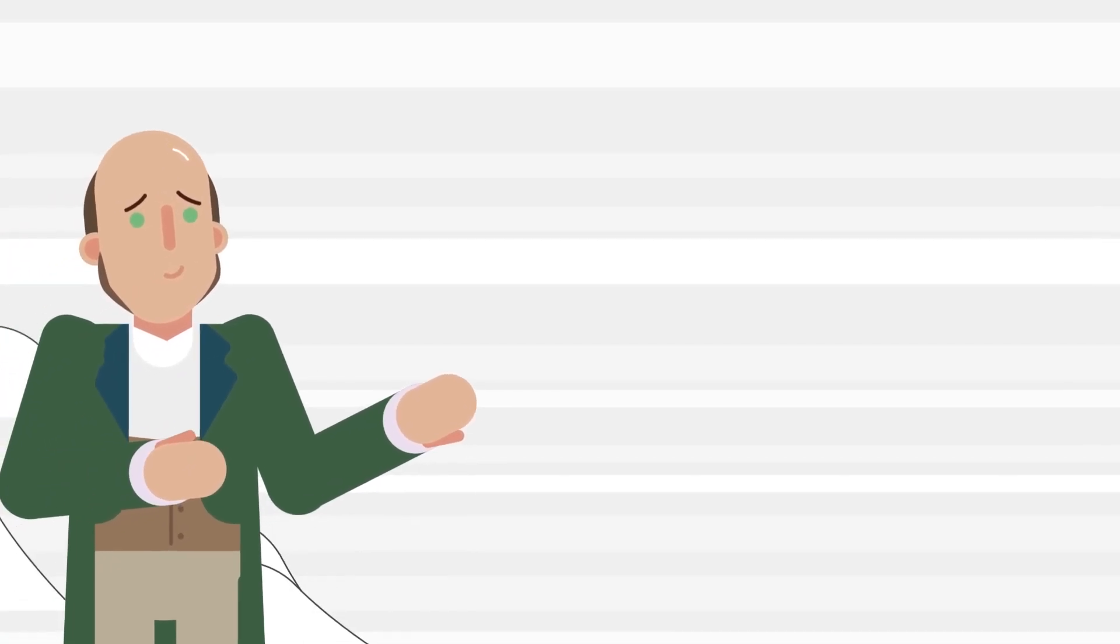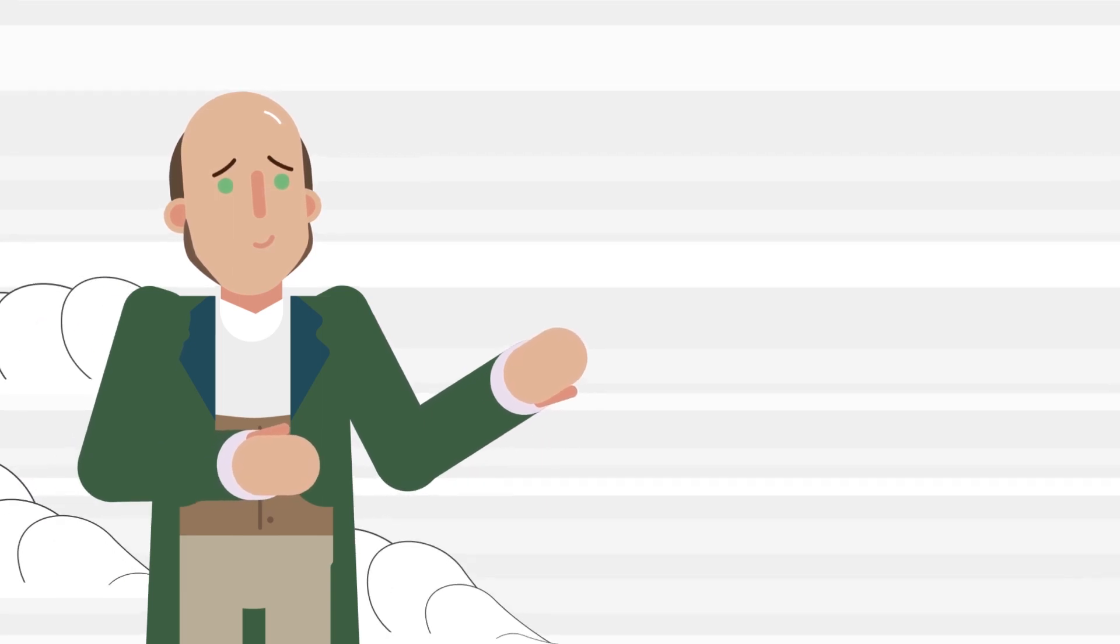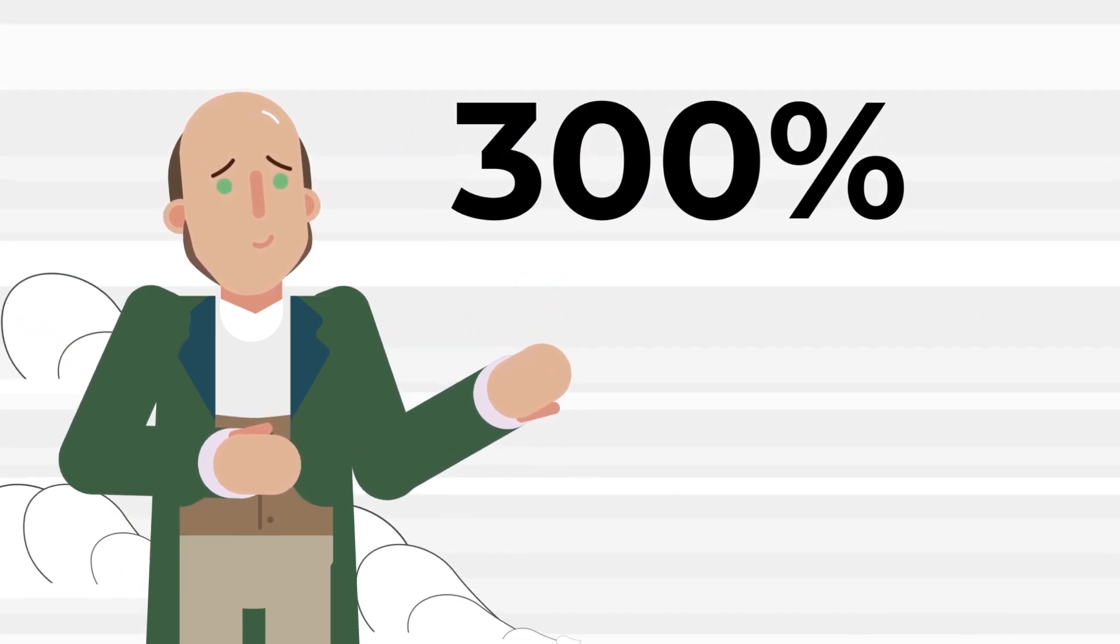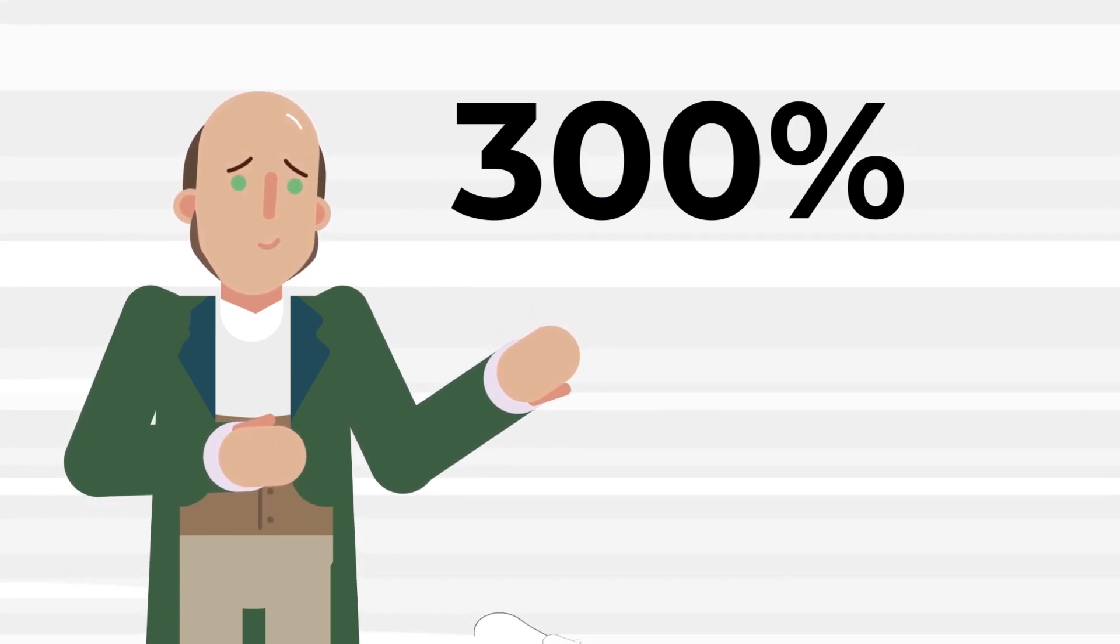In the surgeon's most famous case, Liston's speed went from impressive to disastrous, becoming known in history for having the only surgical operation to end with a 300% mortality rate—the patient, an assistant, and a spectator.